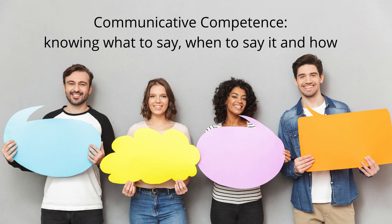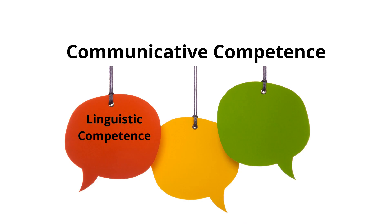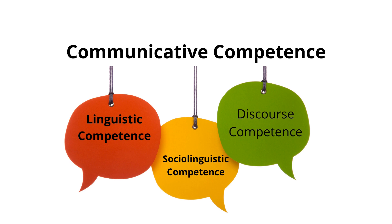Simply put, communicative competence is knowing what to say, when to say it, and how. It involves linguistic competence — being able to use the structural aspects of a language including pronunciation, grammar and vocabulary — sociolinguistic competence, being able to use language in a communicative situation, and discourse competence, being able to participate in conversations.